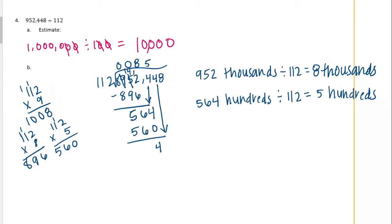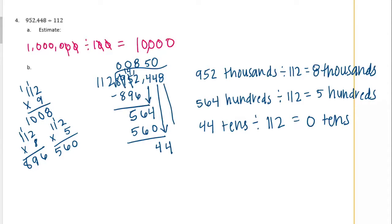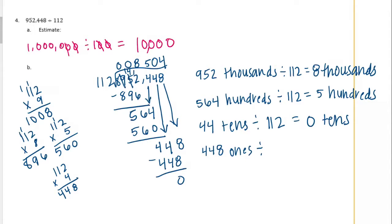Now we're bringing down the 4. So we have 44 tens divided by 112, and 112 can't go into 44. So that's going to be 0 tens. Bring down the 8. So how many times can 112 go into 448? Probably 4. Yes, go in 4 times with no remainder. So our last step was 448 ones divided by 112 and we got 4 ones.